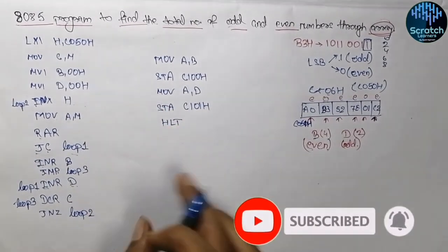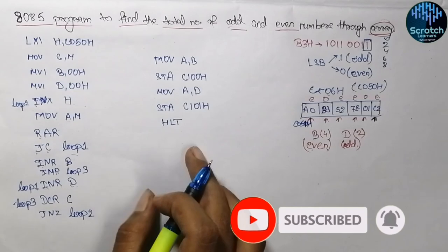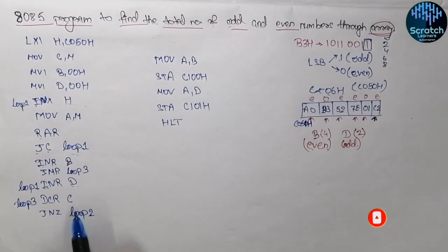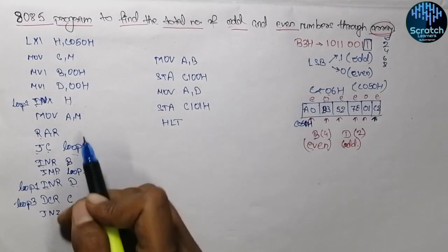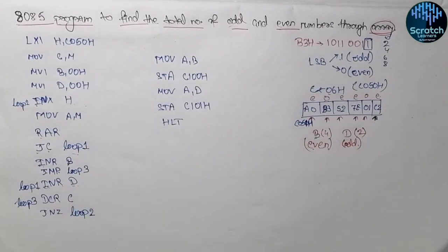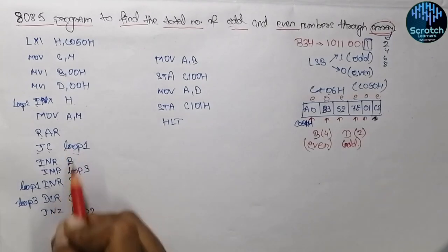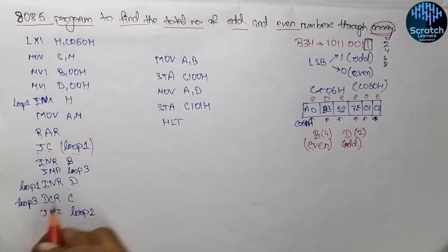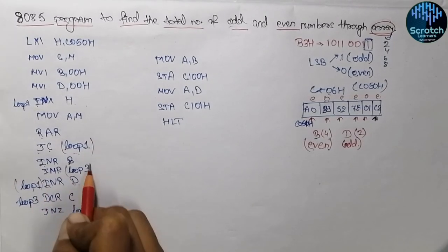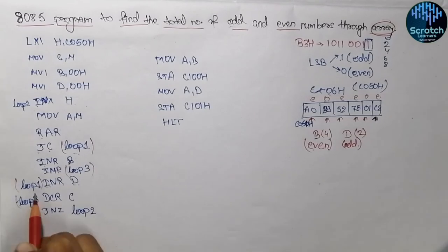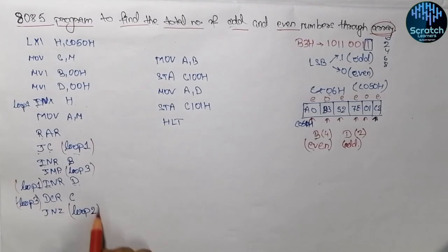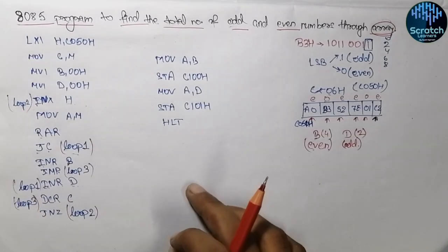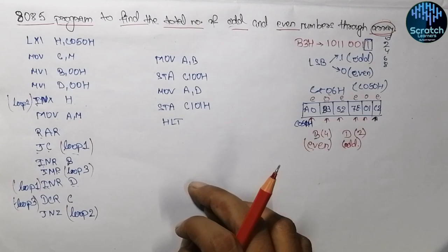So in this way the program works. We are using three loops — Loop 1, Loop 2, and Loop 3. Don't get confused with these loops; just remember where the control of each loop goes. Loop 3 is the unconditional jump and Loop 2 is the JNZ check.